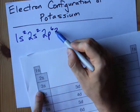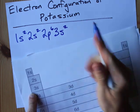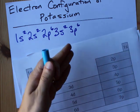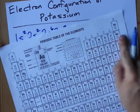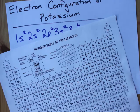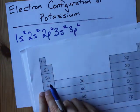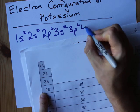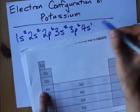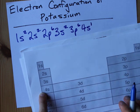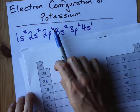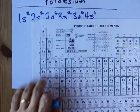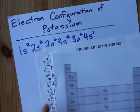3s2 is next. Then 3p6 — you can fit six electrons in a p. If you're wondering how I knew it was six electrons, this block is six elements wide. And then I finally get to the 4s, and potassium is the first element in that. So I write 4s1. You'll notice that 2 plus 2 plus 6 plus 2 plus 6 plus 1 is 19, and that's the atomic number of potassium.